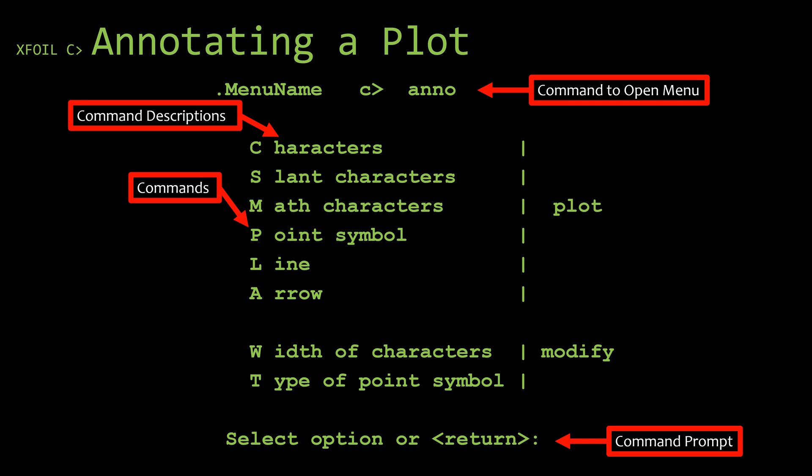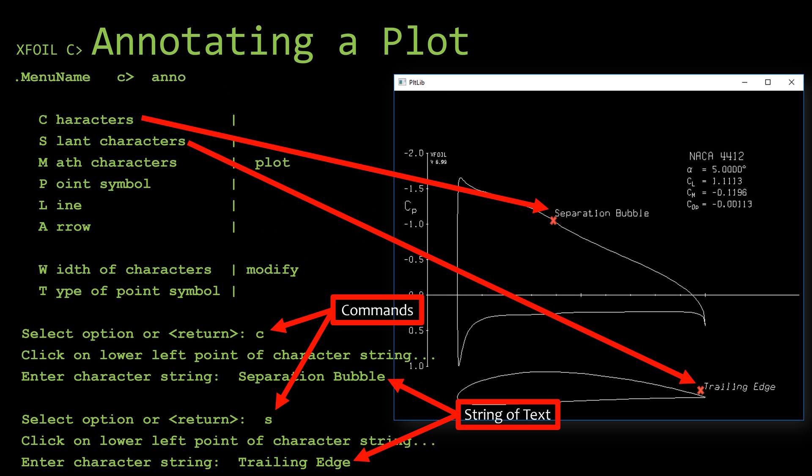For instance, I can change the symbol of the points, or I can change the size of what is actually put onto the plot with those two there. The first two plot commands that you see is characters and slant characters. These commands allow you to choose the location on the plot that you are wanting the text to be displayed, and then type in the string of text that you're wanting to display as the message.